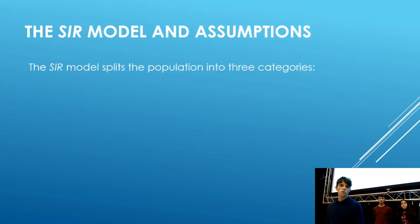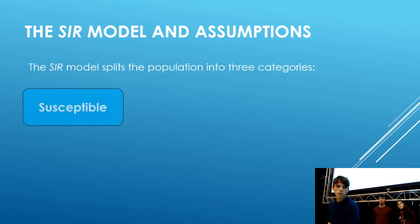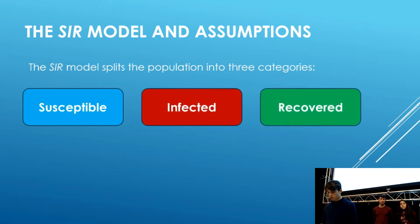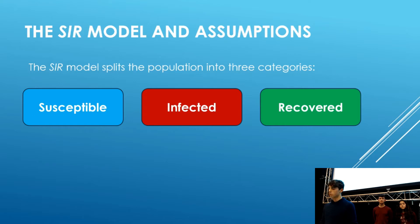The model splits the population up into three categories: susceptible, infected, and recovered members of the population. Some assumptions of the model include people mix randomly, the population size is fixed, no one is initially immune, and recovered individuals are immune.